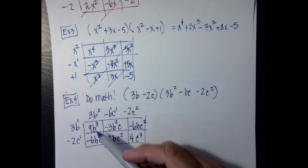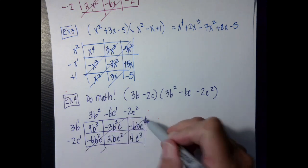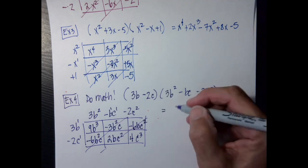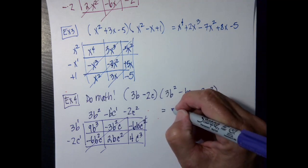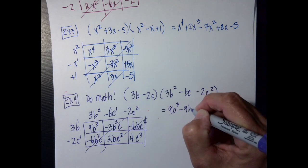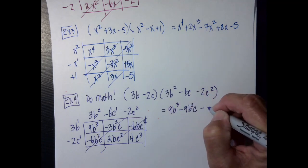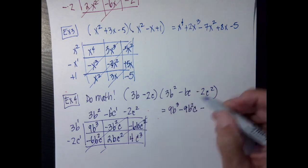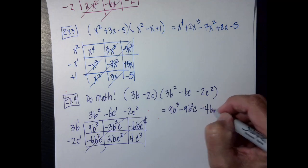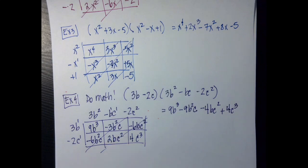Now I'm going to combine like terms. Again, all of my like terms are located along the diagonals. So my product is going to be 9b to the 3rd minus 9b squared c — negative 6 and positive 2 is negative 4bc squared. And then my last term is plus 4c cubed. So that's it. See you soon.